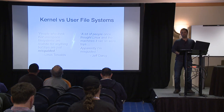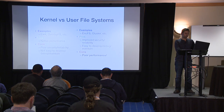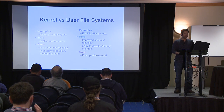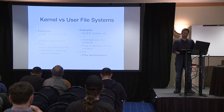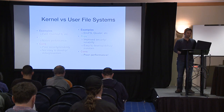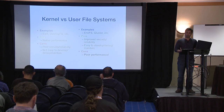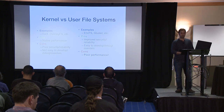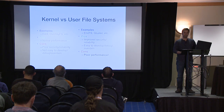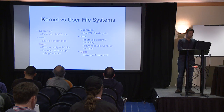The world we live in is divided into kernel and user file systems, and each has its own pros and cons. Kernel file systems give you native performance, but they are not easy to develop, debug, or maintain — for example, ext4. On the other hand, user file systems provide improved reliability and security, and are easy to develop and debug, but they offer poor performance. Examples include Gluster and InkFS.